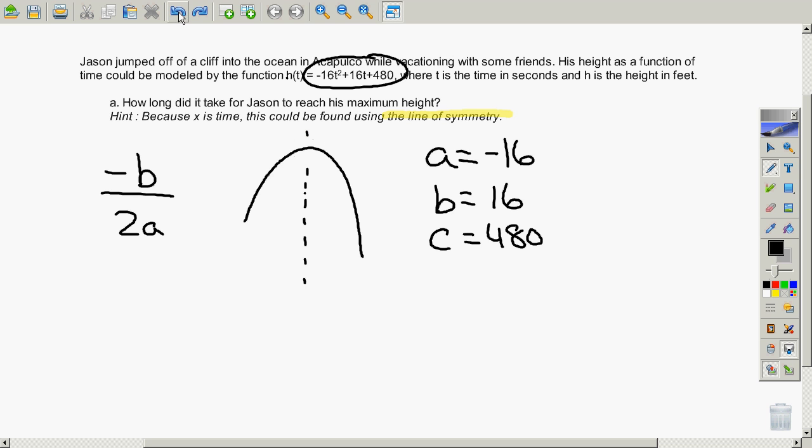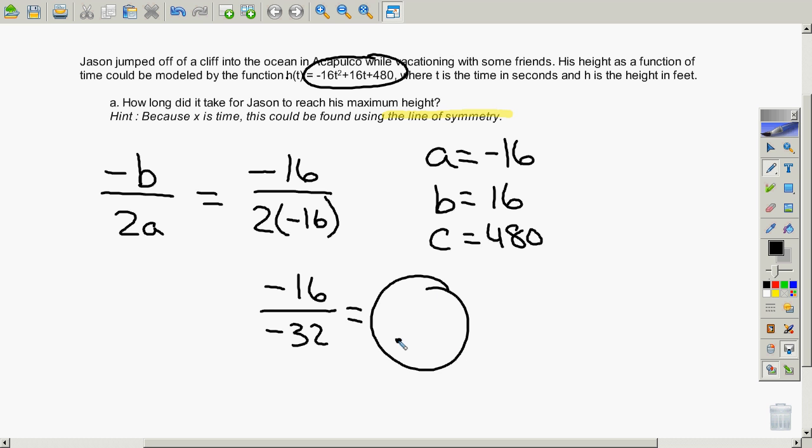Okay, so let's just plug in numbers here and see what we get. So negative b, we should get negative 16 over 2a, which would be 2 times negative 16. And that would be negative 16 over negative 32. And you can see that it looks like it would be about half of a second.